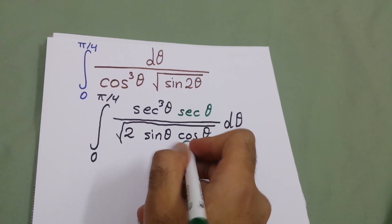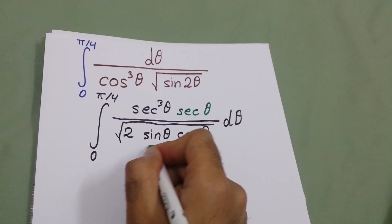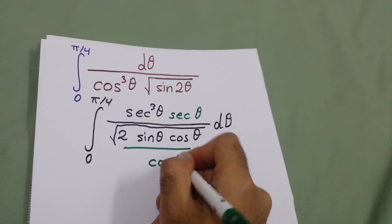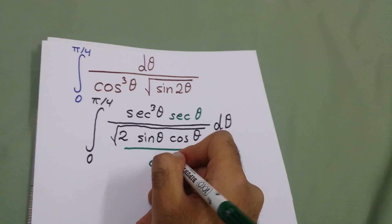Here we will multiply by secant theta, which is dividing by cosine theta. We will make this cosine squared.